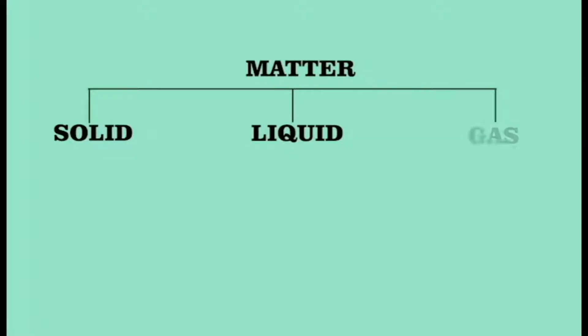Everything around us is made of atoms. Based on arrangement of atoms, things are characterized into solid, liquid and gas.